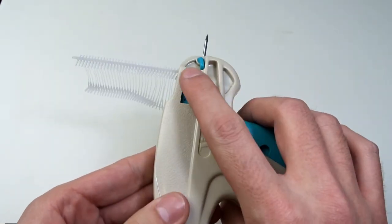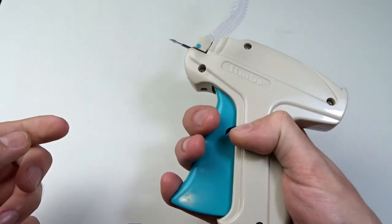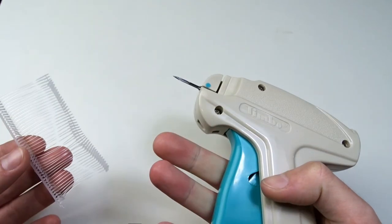To clear a jam, press the green button and take out the fastener clip. Then pull out the needle and remove the jammed material.